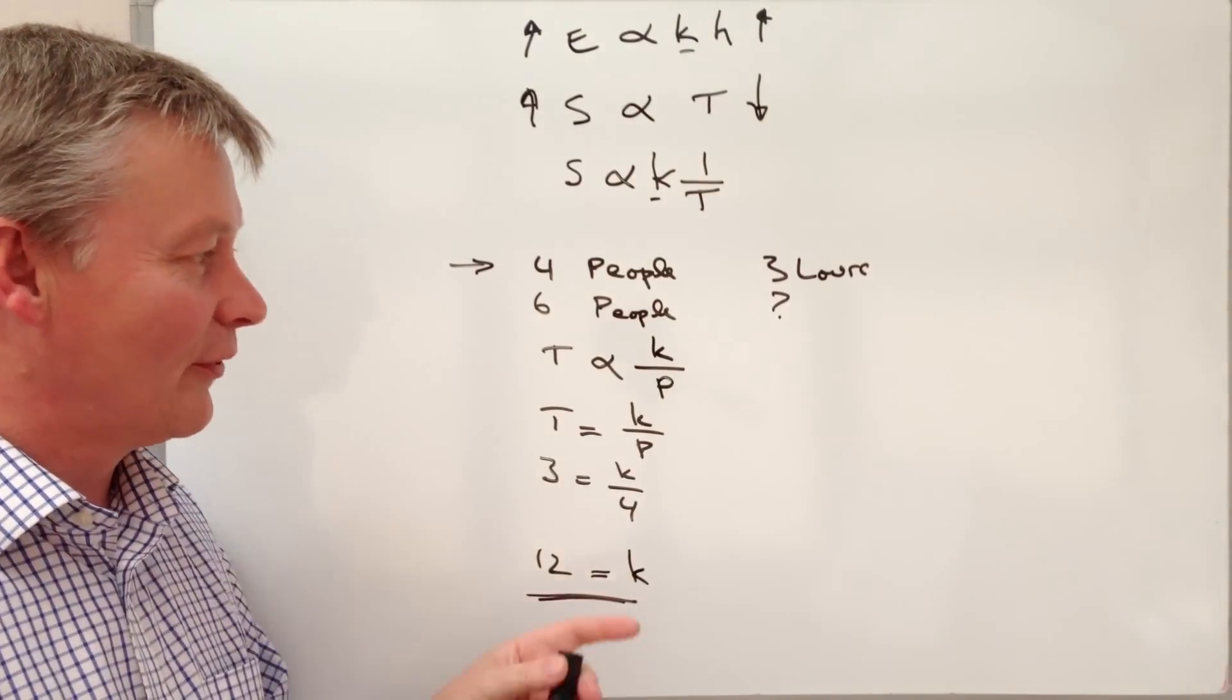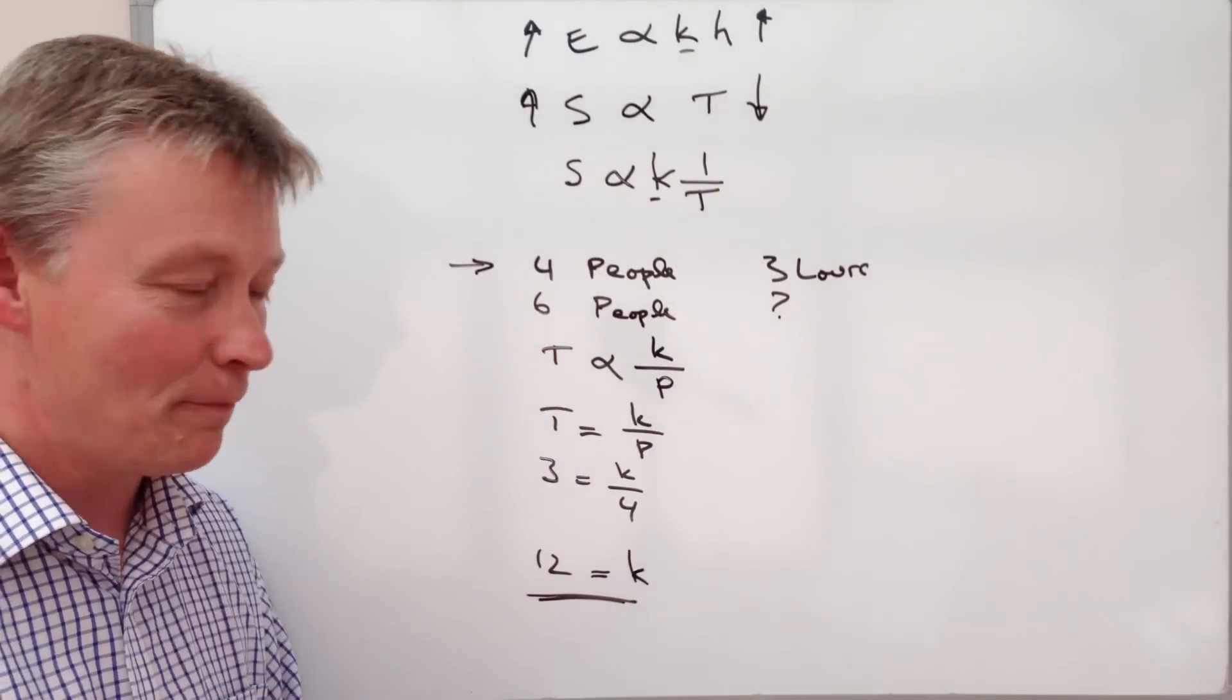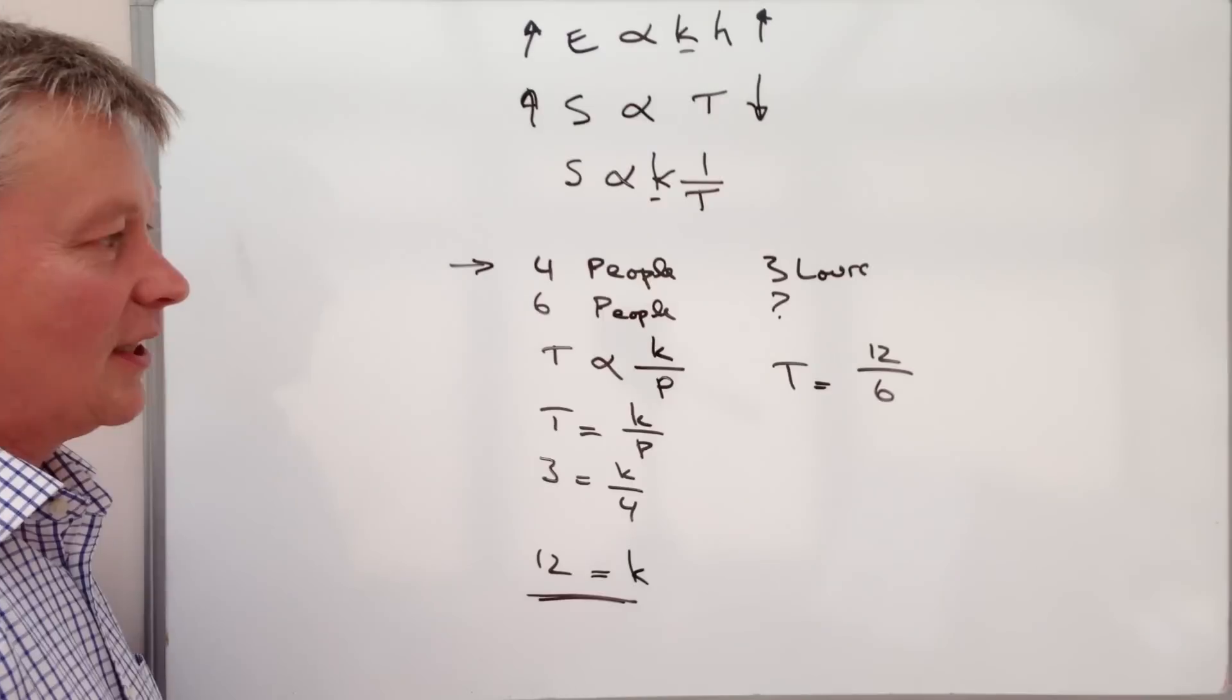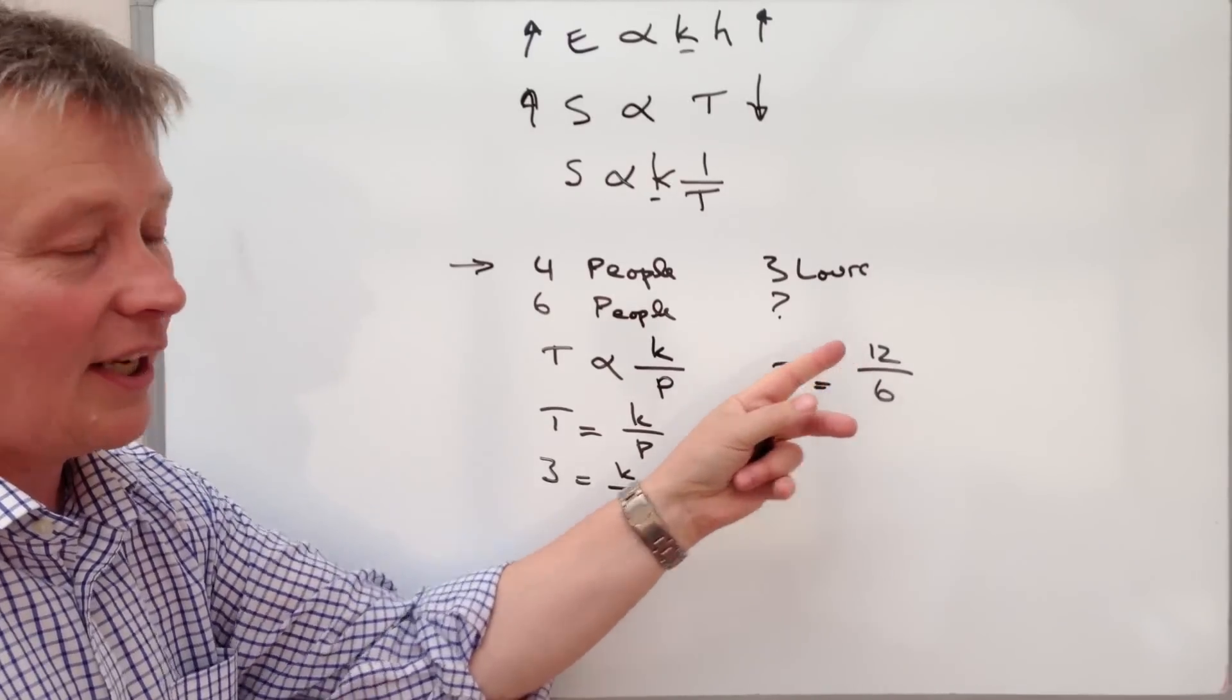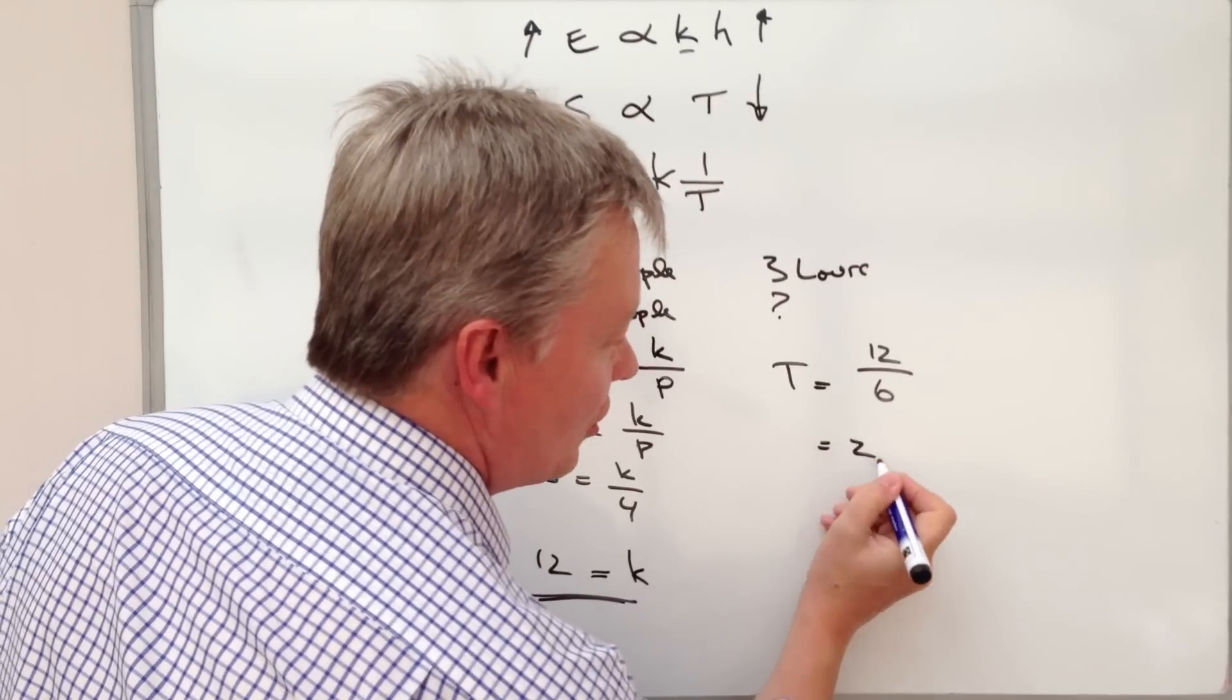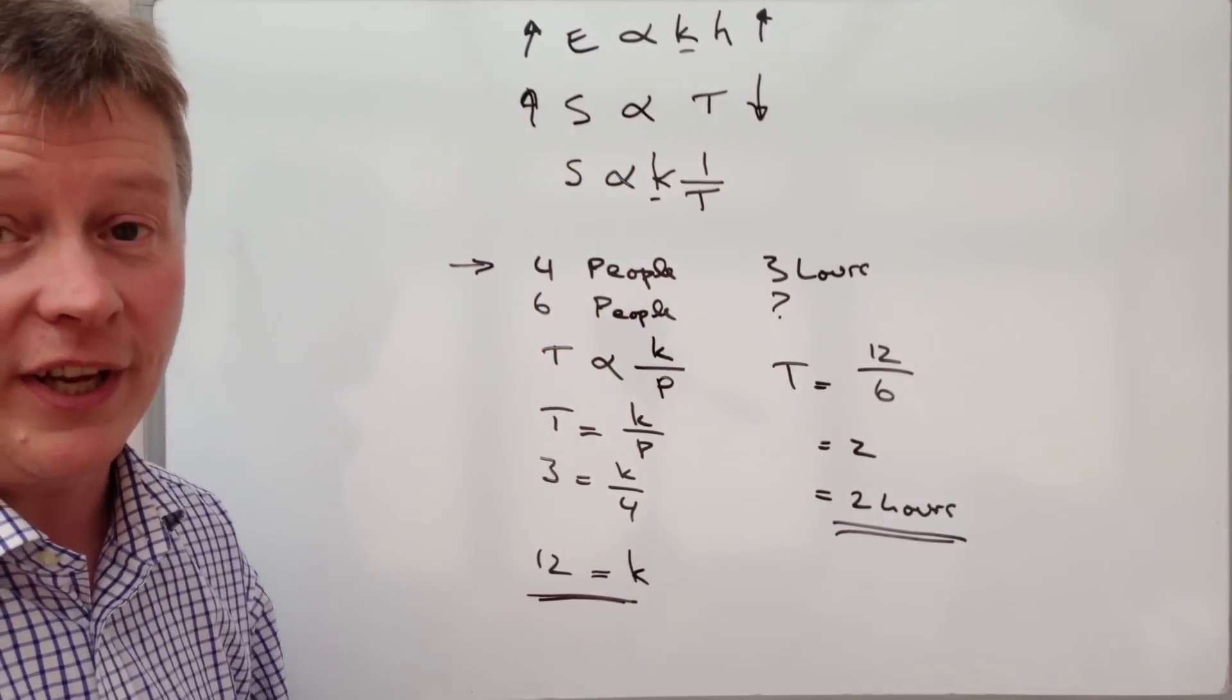So we're going to use that information and put it into the same formula, but this time we have a value of K and we're going to work out the value of T for time. So T equals K, which is 12, divided by 6 in this particular case. In order for us to find out the value of time, it's going to be K as the 12, so 12 panels, but it's going to take 6 people this time to do the same 12 panels. So 12 divided by 6 is 2. It's going to take 2 hours for 6 people, and that would be the answer to your question.